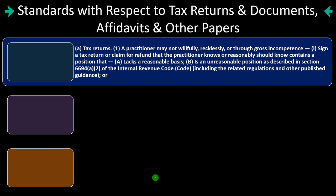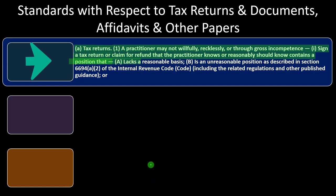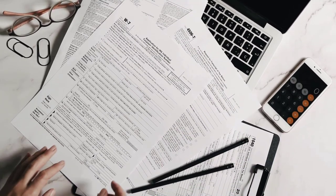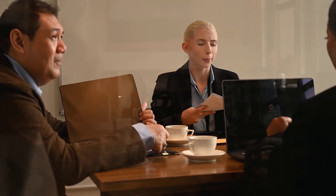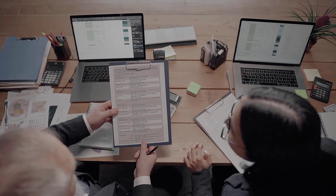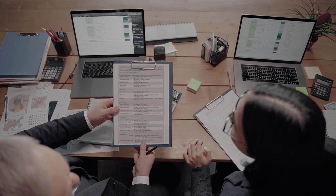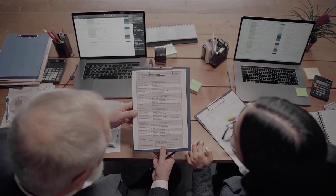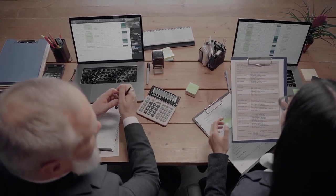Standards with respect to tax returns and documents, affidavits, and other papers — tax returns. A practitioner may not willfully, recklessly, or through gross incompetence sign a tax return or claim for refund that the practitioner knows or reasonably should know contains a position that (A) lacks a reasonable basis, or (B) is an unreasonable position as described in Section 6694(a)(2) of the Internal Revenue Code, including related regulations and other published guidance. The client provides the information that you compile into the tax return, and they're ultimately responsible for that financial data. But if you clearly see something is wrong — if the W-2 was adjusted or something in the data input is clearly wrong — that's the situation being addressed here.